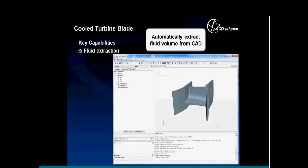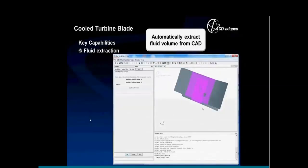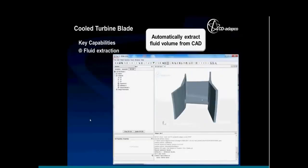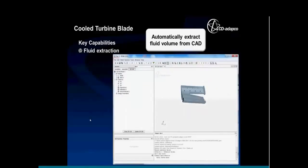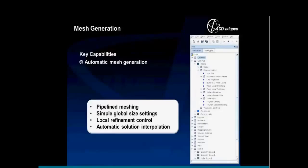A second challenge often faced by the community is extracting the fluid volume. Users are often passed the solid geometry and need the ability to extract the fluid volume to perform conjugate heat transfer analyses. We saw that this tool was really missing in the market. So we developed a capability to easily select the surfaces that bound that fluid and extract the internal volume. If you hide the blade, you see the volume representation of that internal fluid. These CAD capabilities within Star CCM Plus allow us to move to the next step of mesh generation, where we now have a de-featured CAD representation with extracted solid and fluid volumes.